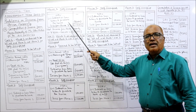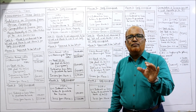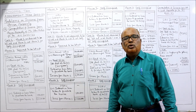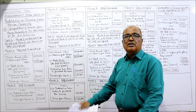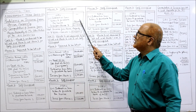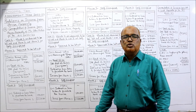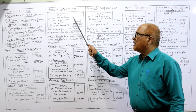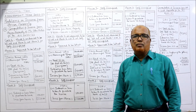For House 3 (self-occupied), NAV is nil. The maximum interest deduction limit for self-occupied is 2 lakh total. Already 1 lakh 50 thousand was claimed for House 2, so only 50 thousand remains. Interest on loan for House 3 is 1 lakh 50 thousand, but only 50 thousand can be deducted. Loss from House 3 = minus 50 thousand. Net income from house property in Case 1: 7 lakh 75 thousand minus 1 lakh 50 thousand minus 50 thousand = 5 lakh 75 thousand.